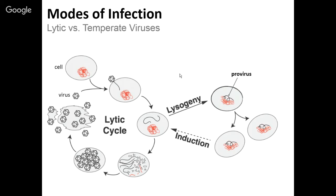If the cell becomes stressed, most of these proviruses have a mechanism to sense that cell's stress and abandon ship — say, this cell is in trouble, and then induce and go through the lytic cycle. There are molecular mechanisms by which the virus keeps itself integrated as part of the host, and it can sense molecularly when that cell is under stress. The decision is essentially: this cell is in trouble — better make more copies, get out and take chances of finding another host to infect.